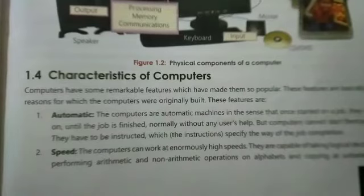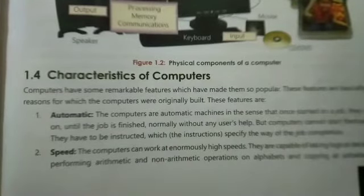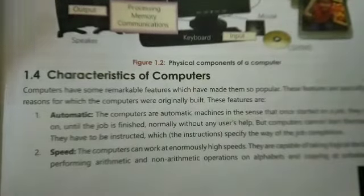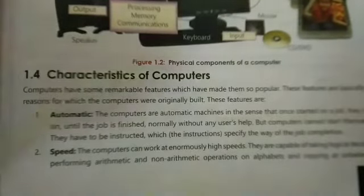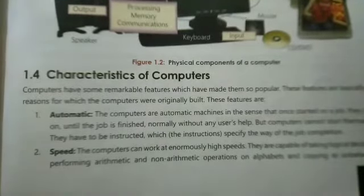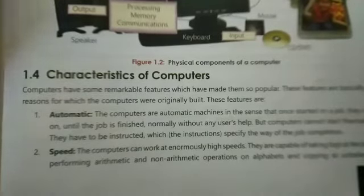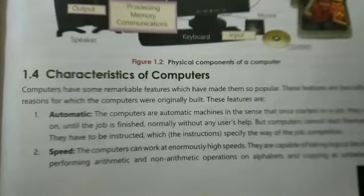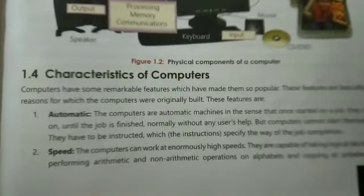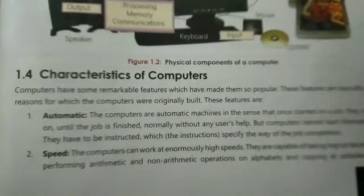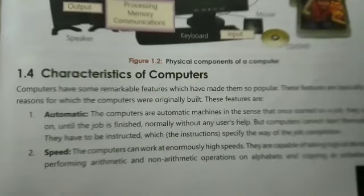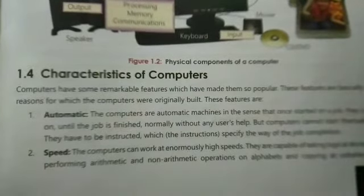Computers have some remarkable features that have made them so popular. These features are basically the reasons for which computers were originally built. One key characteristic is that computers are automatic machines — once started on a job, they carry on until the job is finished normally without any user's help. However, computers cannot start themselves; they have to be instructed, with the instructions specifying the way of job completion.